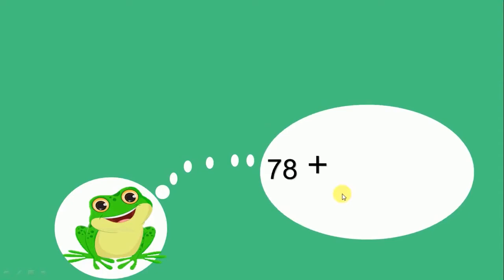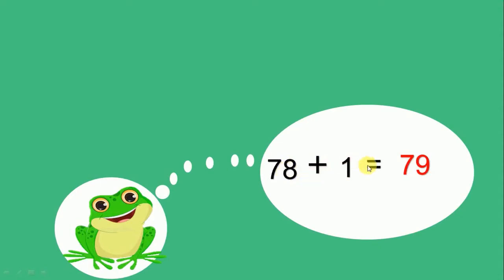78 plus 1 equals 79. Let's add them. 8 plus 1 equals 9. 7 plus 0 is 7. We have 79.